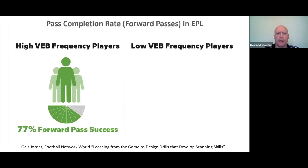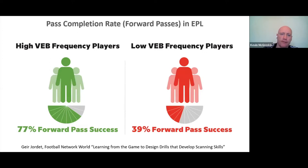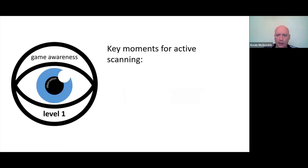Geir's 2013 study on Premier League midfielders found a clear difference in scanning frequency. High-frequency scanners completed 77% of their forward passes, while low-frequency scanners completed only 39%. Both groups were top-level players, raising the question of whether training can help those at 39% close the gap to 77%. His MIT Sloan Sports Conference presentation is also recommended.